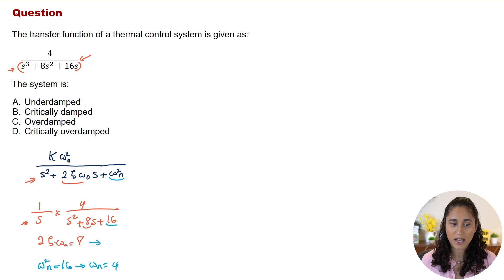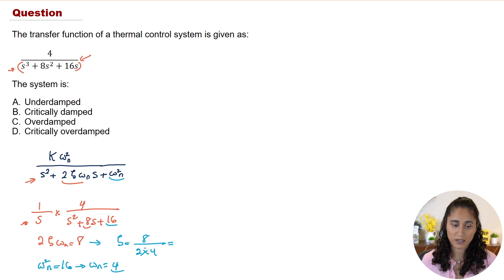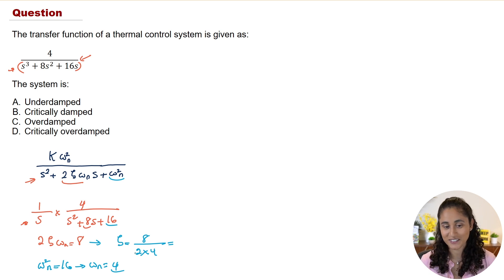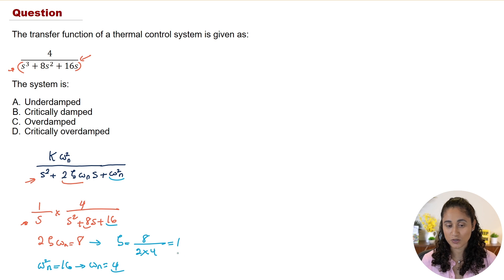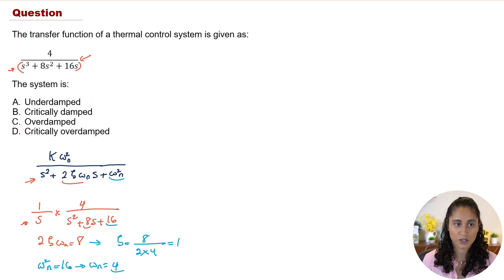Now we can solve for the damping ratio: ζ = 8 / (2 × ω) = 8 / (2 × 4) = 8/8 = 1. The damping ratio is equal to 1, which means the system is critically damped.